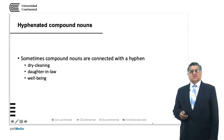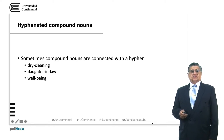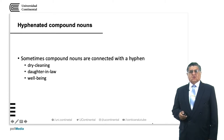Sometimes compound nouns are connected with a hyphen. For example, 'dry cleaning' — dry means without water, and cleaning means to clean something. 'Daughter-in-law'. 'Well-being' — sometimes well-being is written without a hyphen, but both ways are correct.